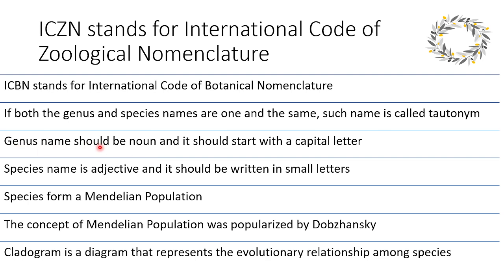Genus name should be a noun always and it should start with a capital letter. Species name is an adjective and it should be written in small letters. Species form a Mendelian population. The concept of Mendelian population was popularized by Dobzhansky. Cladogram is a diagram that represents the evolutionary relationship among species.